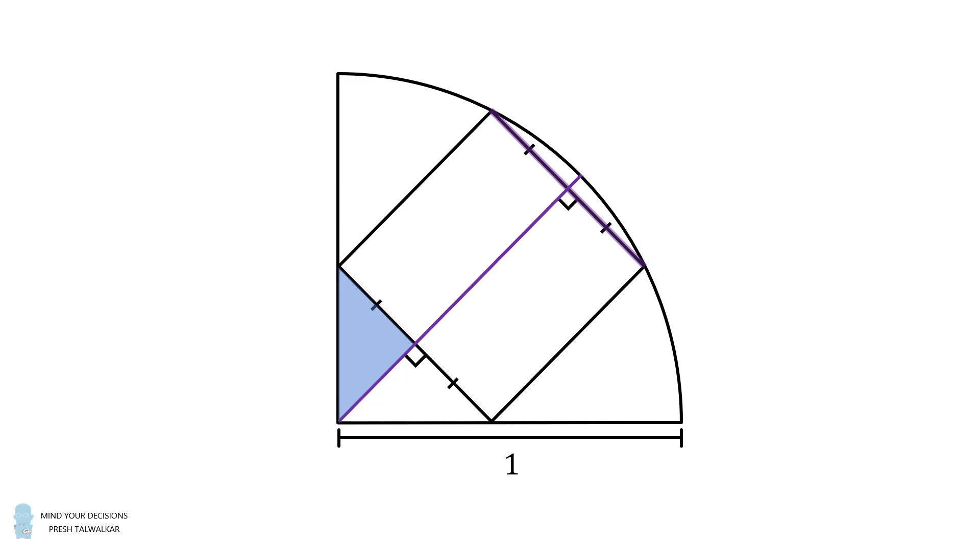Now consider this right triangle. By side angle side, we will have a congruent right triangle right next to it. Since these two triangles are congruent, they will bisect the 90 degrees of the quarter circle. In other words, these two angles will each be equal to 45 degrees.